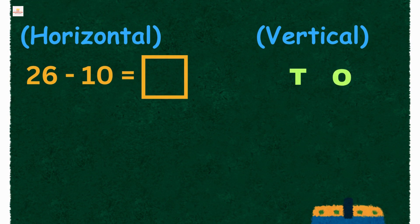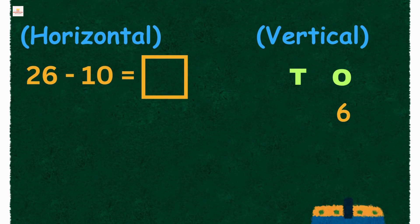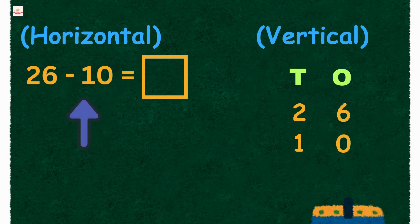When we do subtraction, we always start from the ones place. In 26, the number six is in the ones place and two is in the tens place. In 10, the number zero is in the ones place and one is in the tens place.